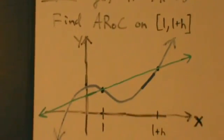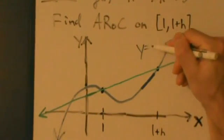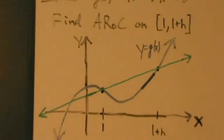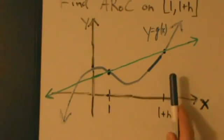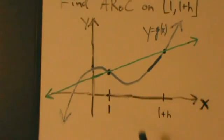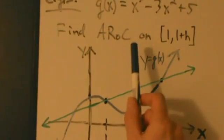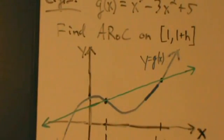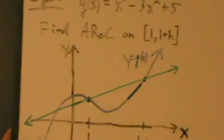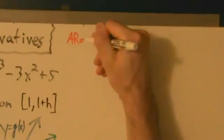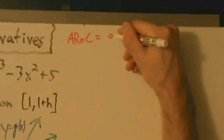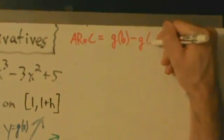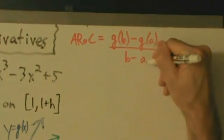Here's a graph of our function y equals g of x. Here we have x equals 1, and here's where x is 1 plus h. Here's the secant line. Remember, the average rate of change is equal to the slope of the secant line. So let's figure out what this is. We'll start with our formula: AROC for average rate of change equals g of b minus g of a divided by b minus a.